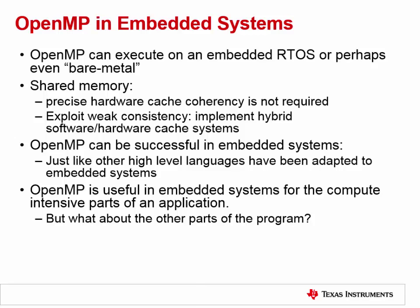To summarize: we've shown you can do it in a bare-metal way, with shared memory but without precise hardware cache coherency, and we feel OpenMP can be successful in embedded systems. But what we have here is really still only good for the compute-intensive parts of an application. We're still just doing traditional OpenMP parallel-for on big data — at least chip-scale big data. What about the other parts of the program? What about this event-driven world? What about how to deal with these processors?